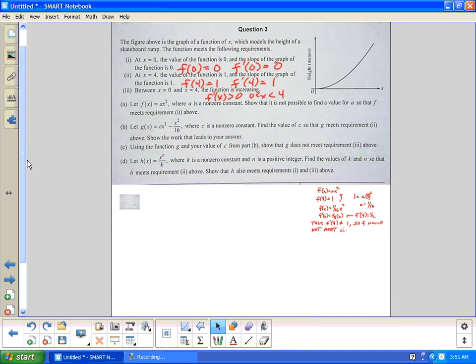Letter b. Let g(x) equal cx³ minus x²/16 where c is a non-zero constant. Find the value of c so that g meets requirement two above. Show the work that leads to your answer. So again, we're going to use requirement two. I'm just going to plug in.